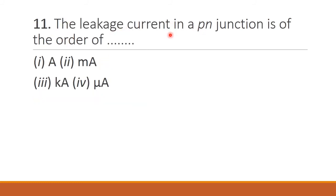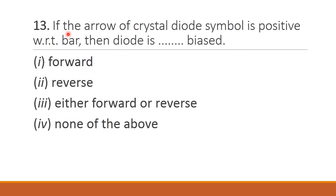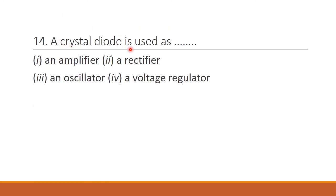Next question: The leakage current in a PN junction is of the order of — leakage current means minimum current, so it will be the order of micro-ampere — option 4 is the right answer. Next question: A crystal diode has — 1 PN junction, 2 PN junctions, 3 PN junctions, none. Diode means it has only 1 PN junction — option 1 is the right answer. Next question: If the arrow of the crystal diode symbol is positive with respect to the bar, then the diode is — if P-type is connected to positive, then it is forward biased — option 1 is the right answer. Next question: A crystal diode is used as — rectifier. We know diode is used as a rectifier — option 2 is the right answer.